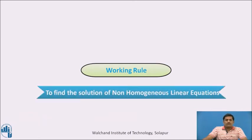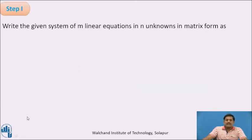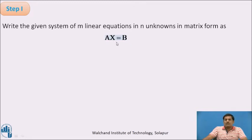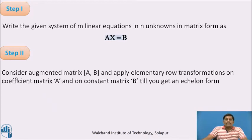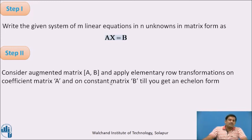Working rule. Step one: Write the given system of m linear equations in n unknowns in matrix form as A·x = b, where A is the coefficient matrix, x is the matrix of unknowns, and B is the matrix of constants. Step two: Consider the augmented matrix [A|B] and apply elementary row transformations on it until you get the echelon form.